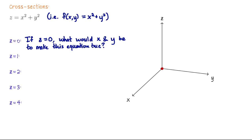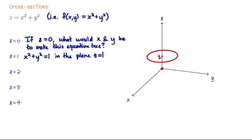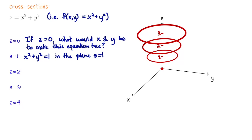In this plane, this is part of the graph of the equation. Next, what would x and y be to satisfy x squared plus y squared equals 1? In other words, what would the z equals 1 cross section look like? That is the unit circle for x and y, so I graph the unit circle in the plane z equals 1. When z equals 2, x squared plus y squared equals 2 defines a circle of radius square root of 2 in the plane z equals 2. When z equals 3, we get a circle of radius square root of 3 in the plane z equals 3. So as we go up in z values, we're defining circles.